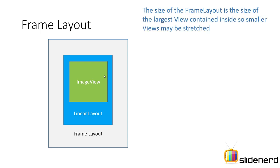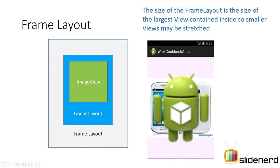One more thing before we jump into Android Studio: the size of the Frame Layout is the size of the largest View contained inside. Here I have two images stacked on top of each other. The image behind — the mobile phone — is higher in resolution, while the Android icon in the foreground has a very small resolution. So the size of the Frame Layout is going to be the size of the phone image, and that is why the Android icon appears stretched — you can see the pixelated effect. So when making images inside a Frame Layout, keep this in mind so your images don't look ugly because they are stretched.